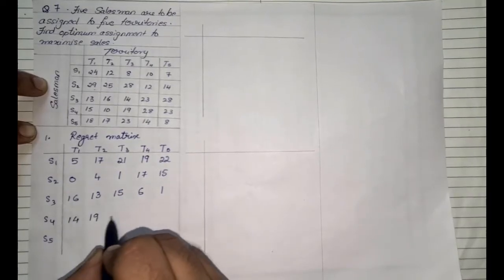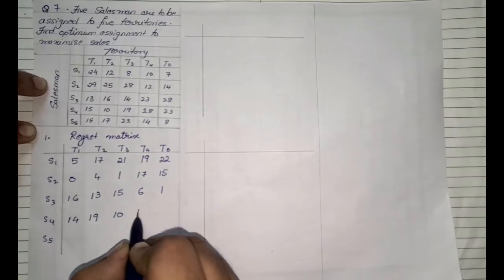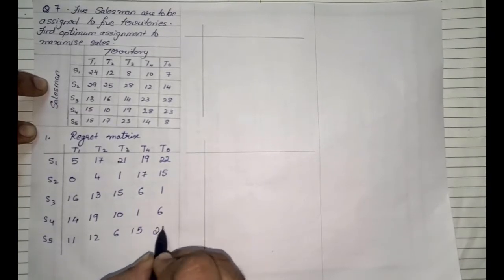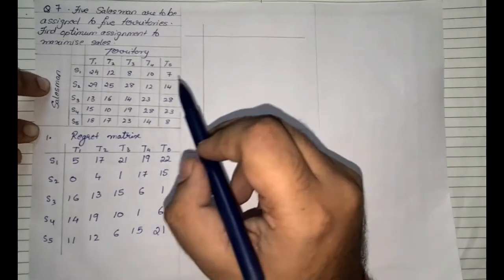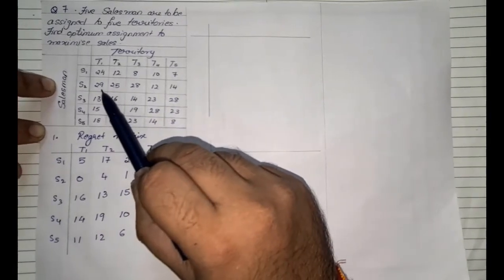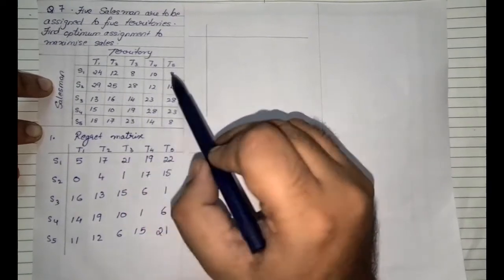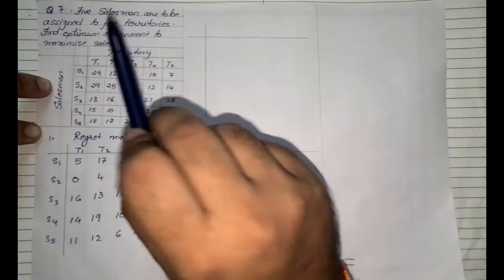Continuing the regret table: 20, 14, 19, 10, 1, and 6. For the last row it would be 11, 12, 6, 15, and 21. We have subtracted 29 from all other values to get the new regret table. That is step number one whenever there is a sum based on maximization.